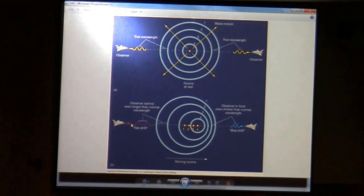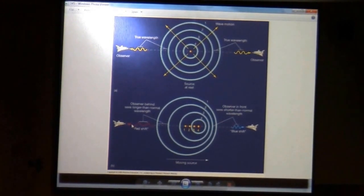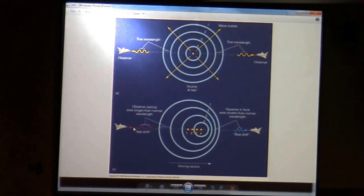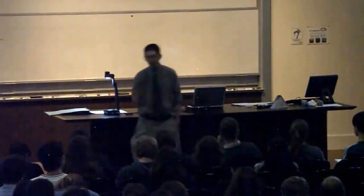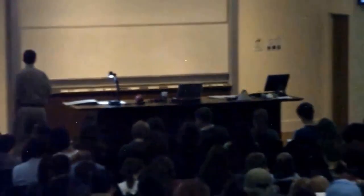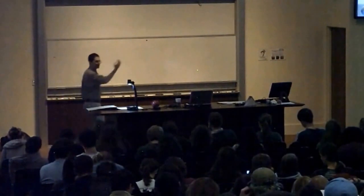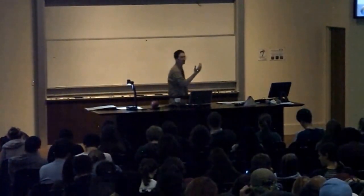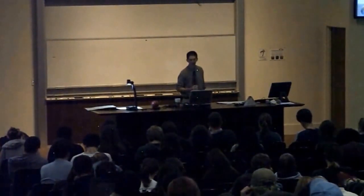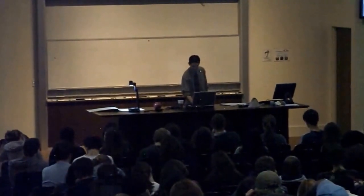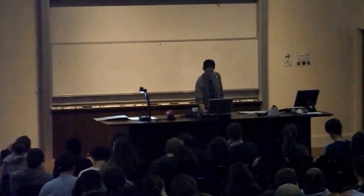And we still use the terms blue shift and red shift if it's outside the visible spectrum. It's being shifted to higher frequencies, like UV light being shifted to the x-rays. We still call that a shift towards the blue. So this is a really powerful tool for figuring out motions. We can't see the thing moving towards us or away from us, but we can figure out its motion towards us and away from us by seeing how much the light has shifted.